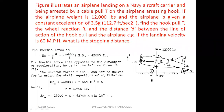The figure illustrates an airplane landing on a Navy aircraft carrier and being arrested by a cable pull T on the airplane arresting hook. The airplane weight is 12,000 pounds and the airplane is given a constant acceleration of 3.5 G. Find the hook pull T, the wheel reaction R, and the distance D between the line of action of the hook pull and the airplane CG.